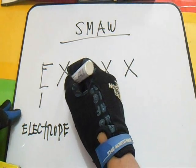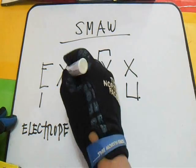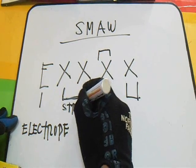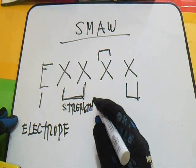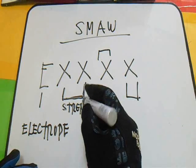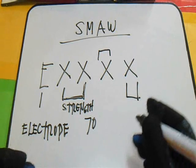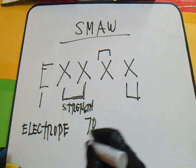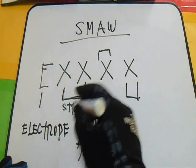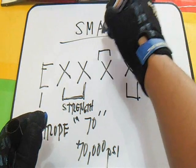The two X's represent the strength. For example, '70' means the tensile strength of the deposited weld metal is 70,000 psi. That is our strength value.